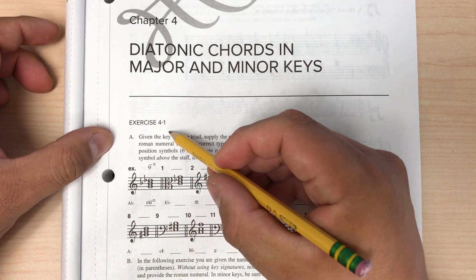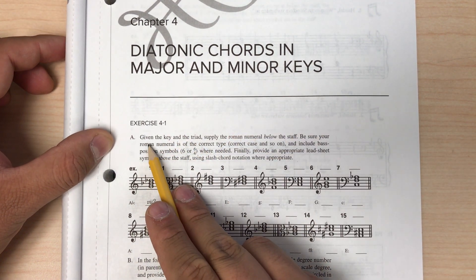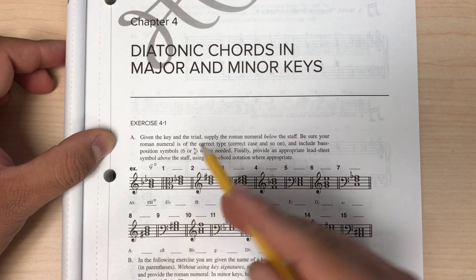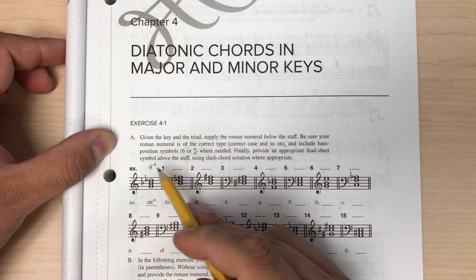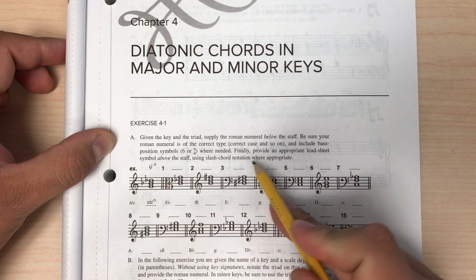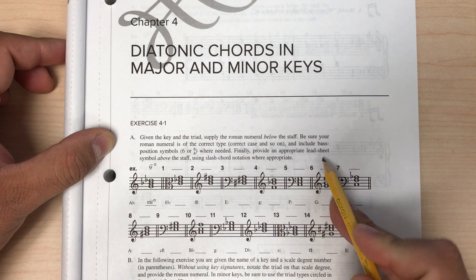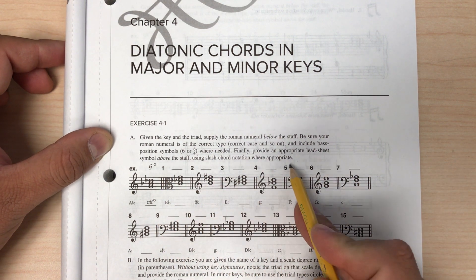This is Exercise 4-1, Part A. In this part of the homework, we are given the key and the triad, and we have to supply the Roman numeral below the staff. Be sure your Roman numeral is the correct type and include base position symbols. Finally, provide an appropriate lead sheet symbol above the staff using slash chord notation where appropriate.